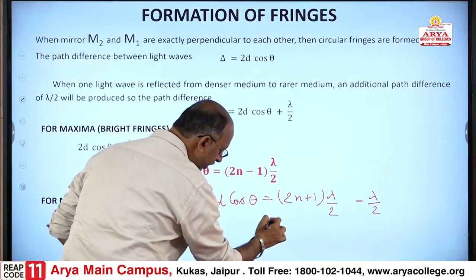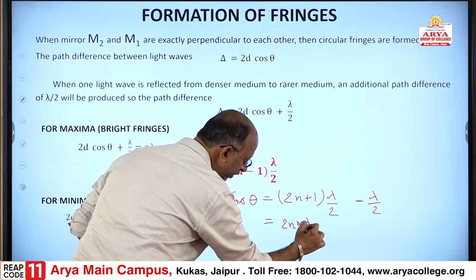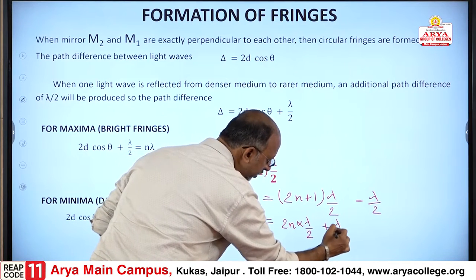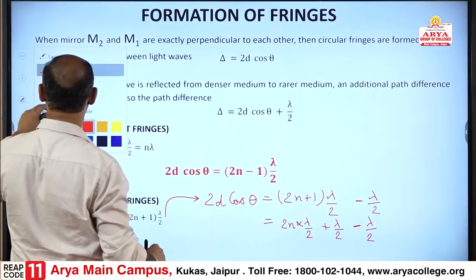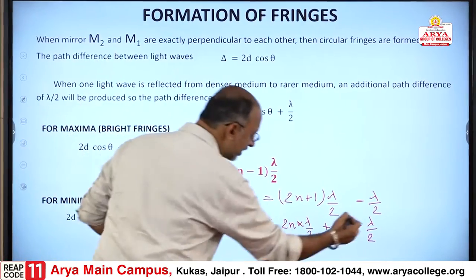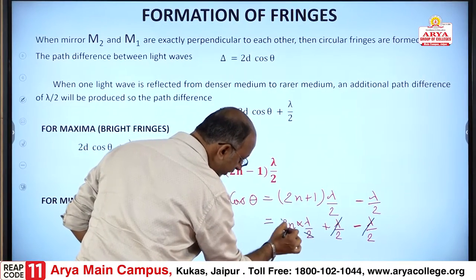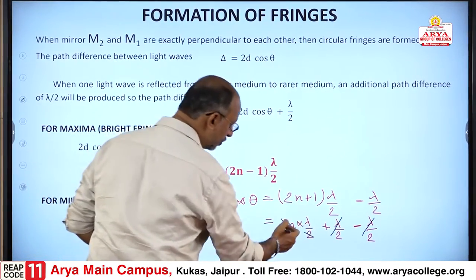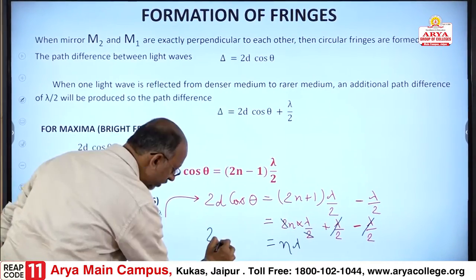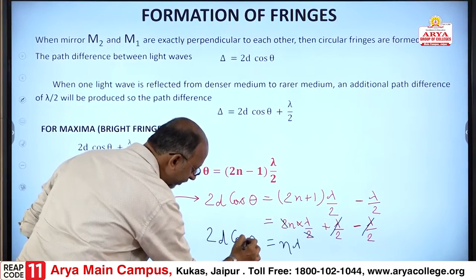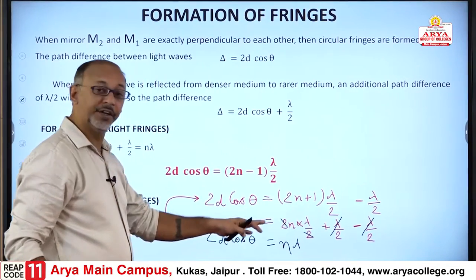Applying the dark fringe condition: we open the bracket to get 2nλ/2 + λ/2. The λ/2 from this and the λ/2 already in the path difference equation cancel each other. We are left with 2D cosθ = 2nλ/2, and the 2s cancel, giving the dark fringe condition: 2D cosθ = nλ.